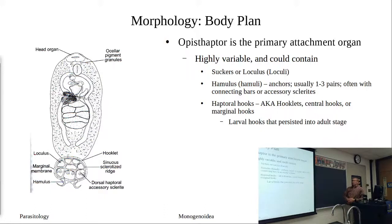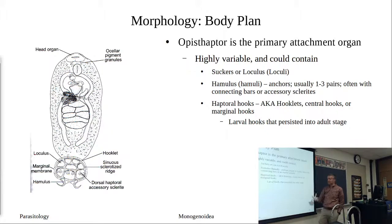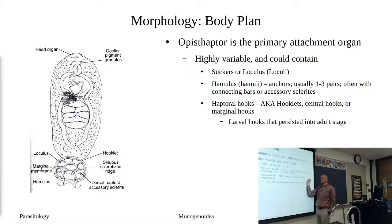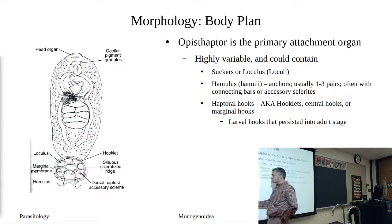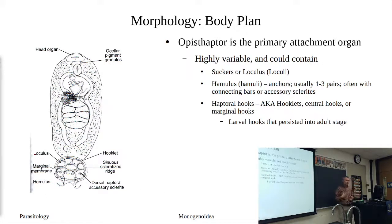The opisthaptor also has haptoral hooks — these are different from the hamuli. Hamuli are the large sickle-like hooks; haptoral hooks are very small and are also called hooklets, central hooks, or marginal hooks. These are actually the larval hooks that are retained from the larval stage. When first hatched, the opisthaptor isn't fully developed and may not have hamuli yet, but it has marginal hooks or hooklets that allow attachment. As the worm matures into an adult, the hamuli develop, and they all have connecting bars called pectoral bars.